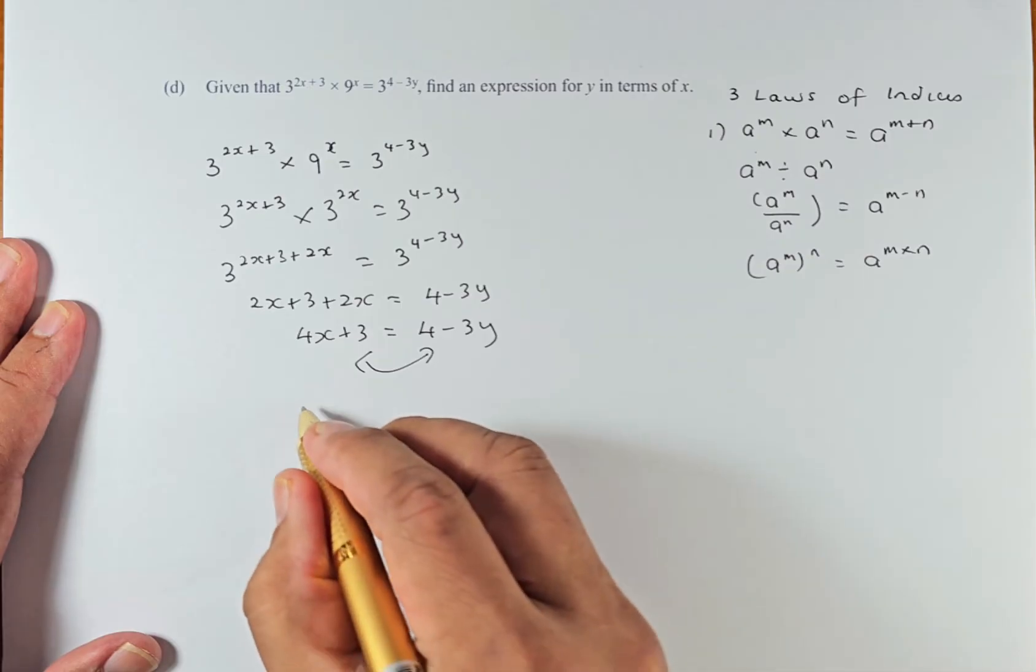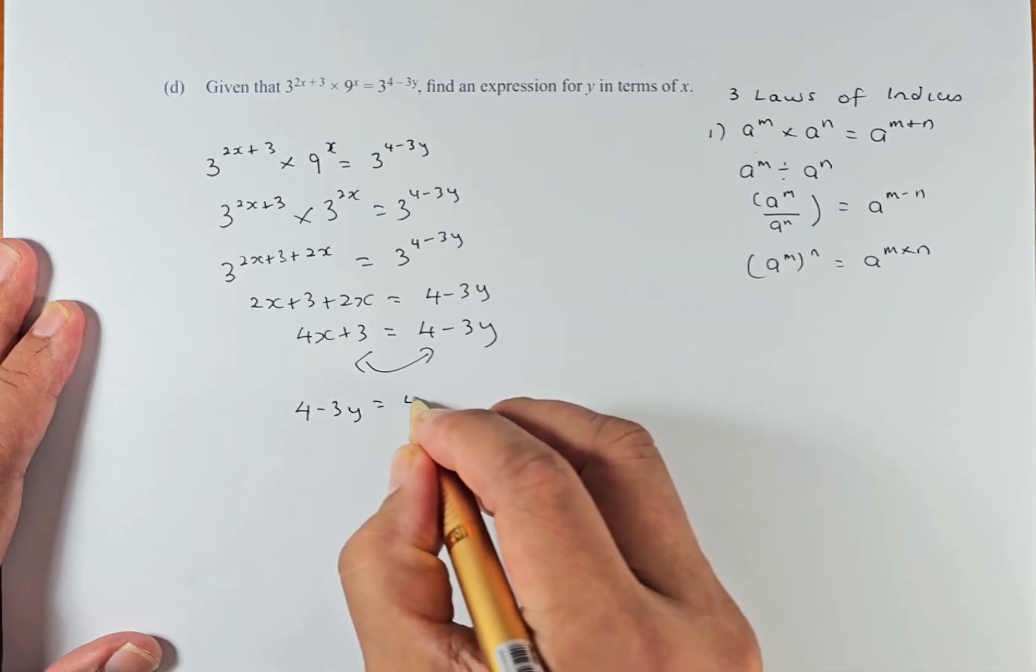Because we want y as the subject of the formula, we're going to swap this over. So 4 minus 3y equals 4x plus 3.